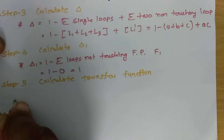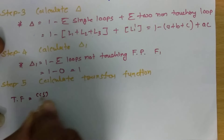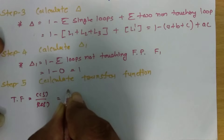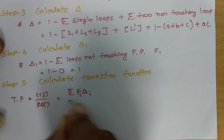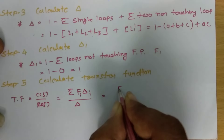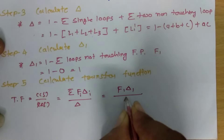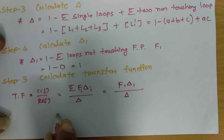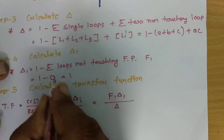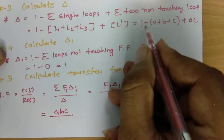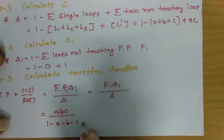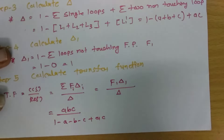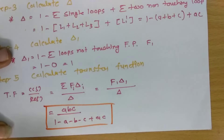Now we can calculate the transfer function C(s)/R(s), which equals the summation of forward path gain times its cofactor, divided by delta. With only one forward path: C(s)/R(s) = F1 × delta1 / delta = ABC × 1 / (1 − A − B − C + AC). This is the transfer function for the given signal flow graph.